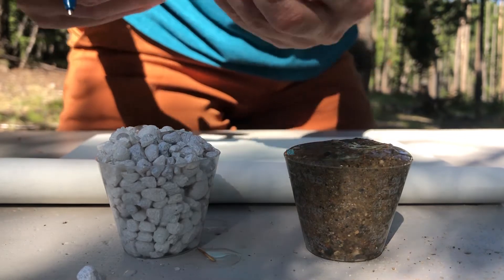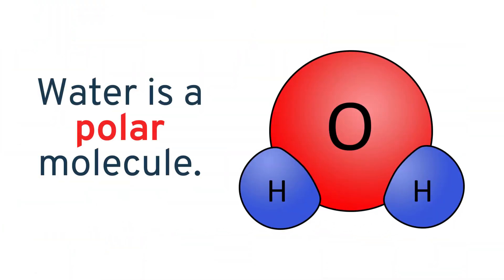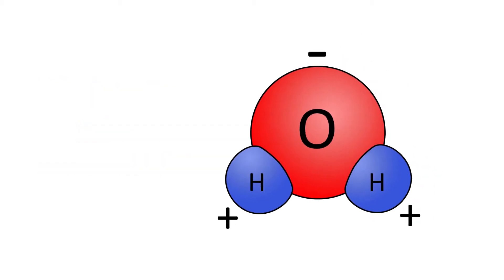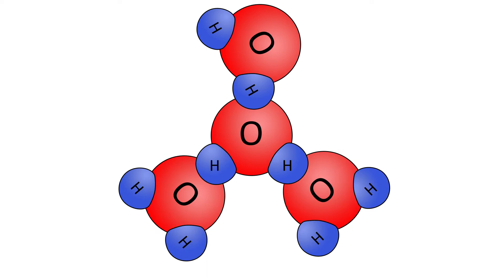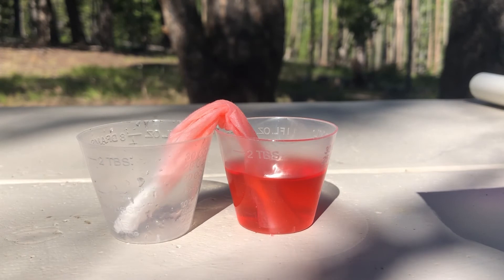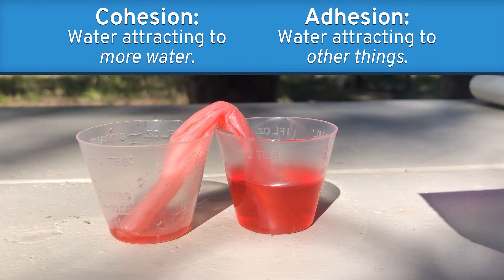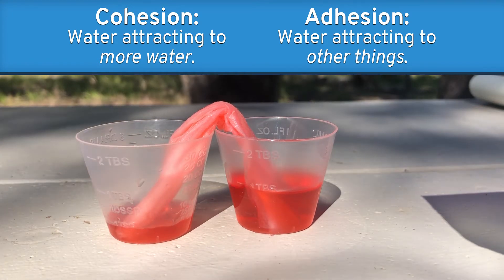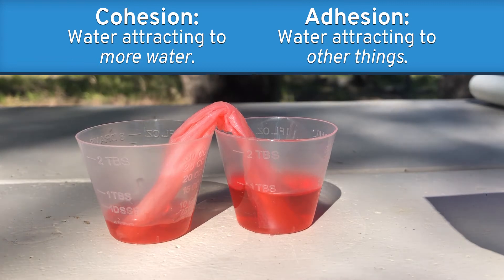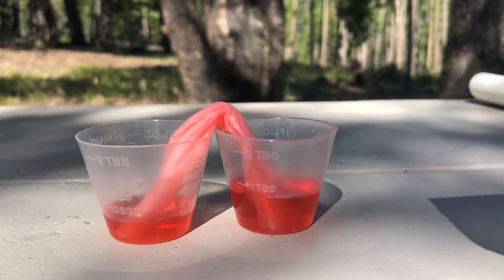Groundwater is complex and interesting because water is a polar molecule. In other words, it behaves like a magnet, with both a positive and a negative pole — it is attracted to itself and other surfaces. These magnetic or polar qualities in water behave in ways we call cohesion and adhesion. Cohesion describes water's attraction to itself, and adhesion describes its attraction to other surfaces. When water wicks up surfaces such as a tissue, it is called capillary action, which is a combination of both cohesion and adhesion.